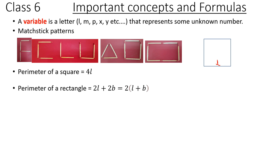Perimeter of a rectangle equals 2L plus 2B, which equals 2 times (L plus B). This means the length of the rectangle is L and the breadth is B. So we have 2L and 2B, and when you take out 2 as common, that is 2(L plus B).